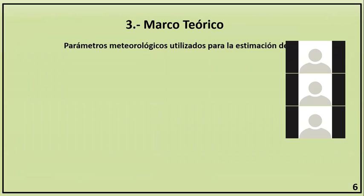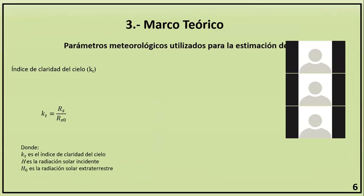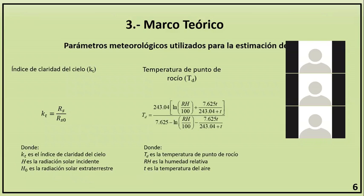Al analizar los modelos empíricos existentes en la literatura, se encontró que para que un modelo sea confiable al estimar la radiación PAR, debe contar con al menos alguno de los siguientes parámetros: el índice de claridad del cielo, que es la relación entre la irradiancia sobre una superficie horizontal y la irradiancia solar extraterrestre; la temperatura del punto de rocío; y el ángulo de elevación solar, cuyo complemento es el ángulo cenital solar. El ángulo de elevación solar puede ser calculado mediante el método propuesto por Michalski en 1988.